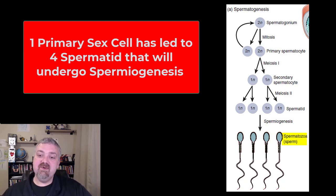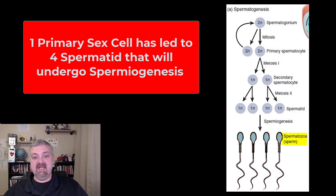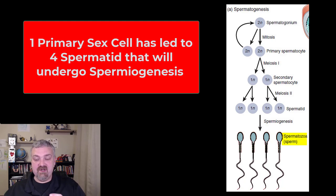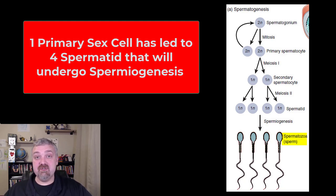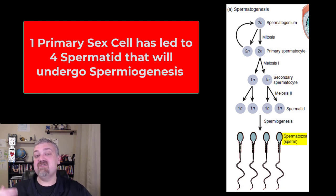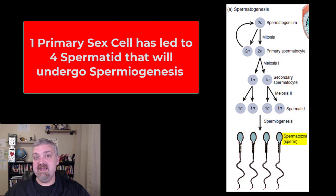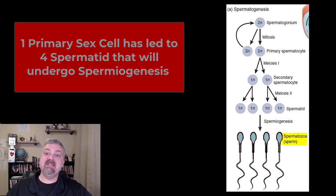So what happens during spermiogenesis to turn the spermatid into a sperm? You're going to see a loss of cytoplasm — there's very little cytoplasm in a sperm cell. It then develops the other pieces that it needs. Once immature sperm are produced, they leave the seminiferous tubules and travel to the epididymis, where further maturation occurs. So sperm are produced in the seminiferous tubules and mature in the epididymis.